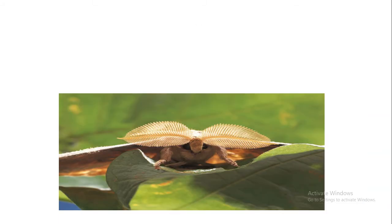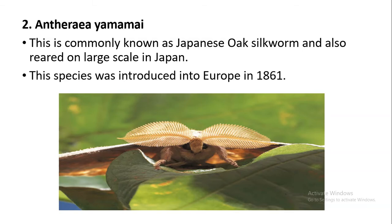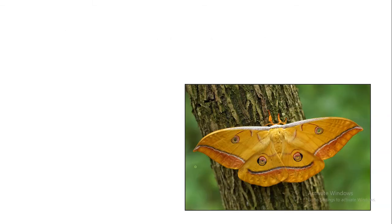The second species is Antheraea yamamai, also called the Japanese oak silkworm. It is reared on a large scale in Japan, and this species was introduced into Europe in 1861.